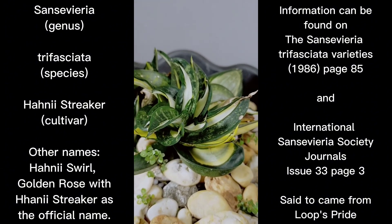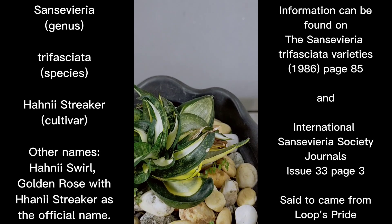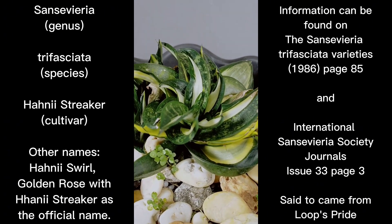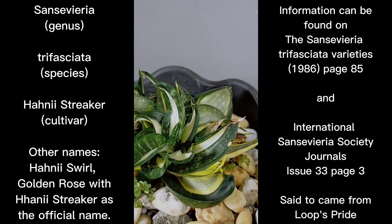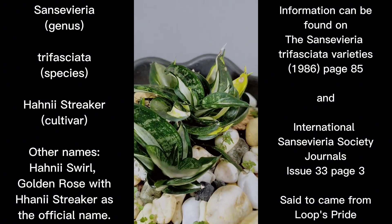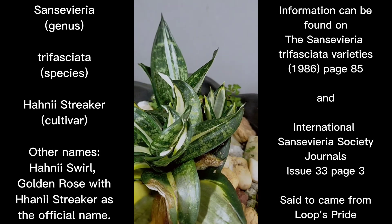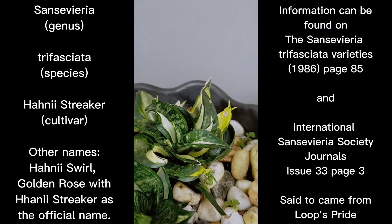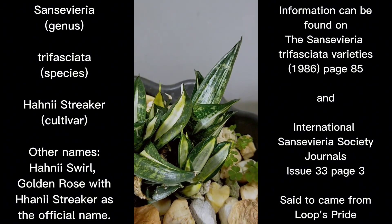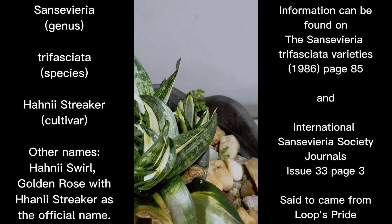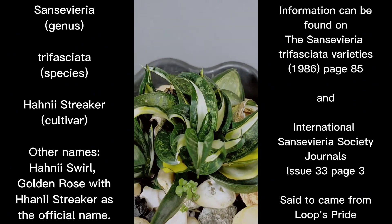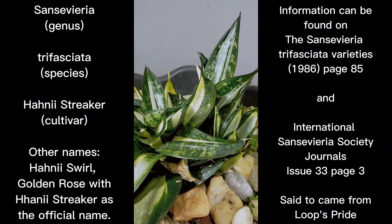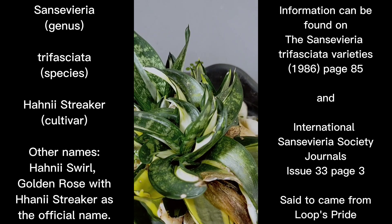We're going to add more until we reach almost 70. What I'm showing you right now has the ID of Sansevieria trifasciata Honey Eye Streaker. For reference, you can find information about this cultivar in the Sansevieria trifasciata Varieties by Juan Chahinian, back in 1986, on page 85.